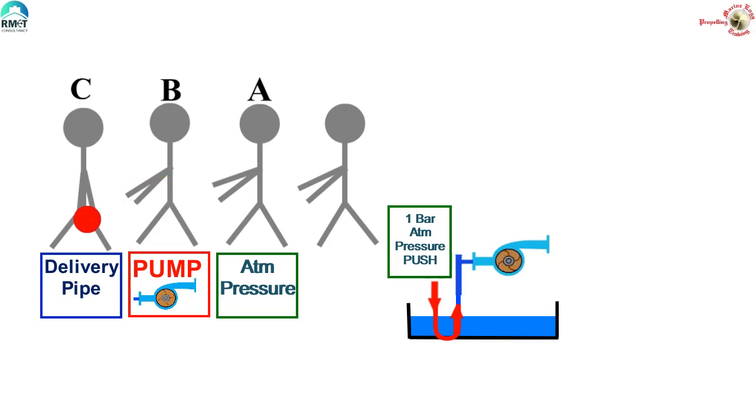Now let's move out of the story and get technical. Once the pump receives the liquid, it simply displaces the liquid into the delivery pipe. Now the casing of the pump is in vacuum. The atmospheric pressure pushes the liquid again into the casing and the impeller throws it into the delivery pipe. This process being continuous.